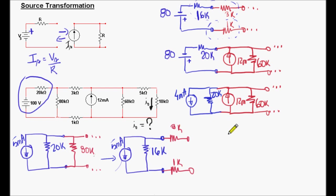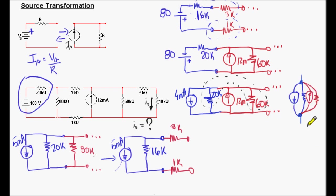Now we look at this part of the circuit. Can we combine those components? Yes. We can see that this 20k resistor is in parallel with the 60k resistor, so we can combine them. If we look at this picture on the right side, we can see that this node, this node, this and this are all the same point — the same node. So the resistor in blue (20k) and the one in red (60k) are in parallel and we can combine them.